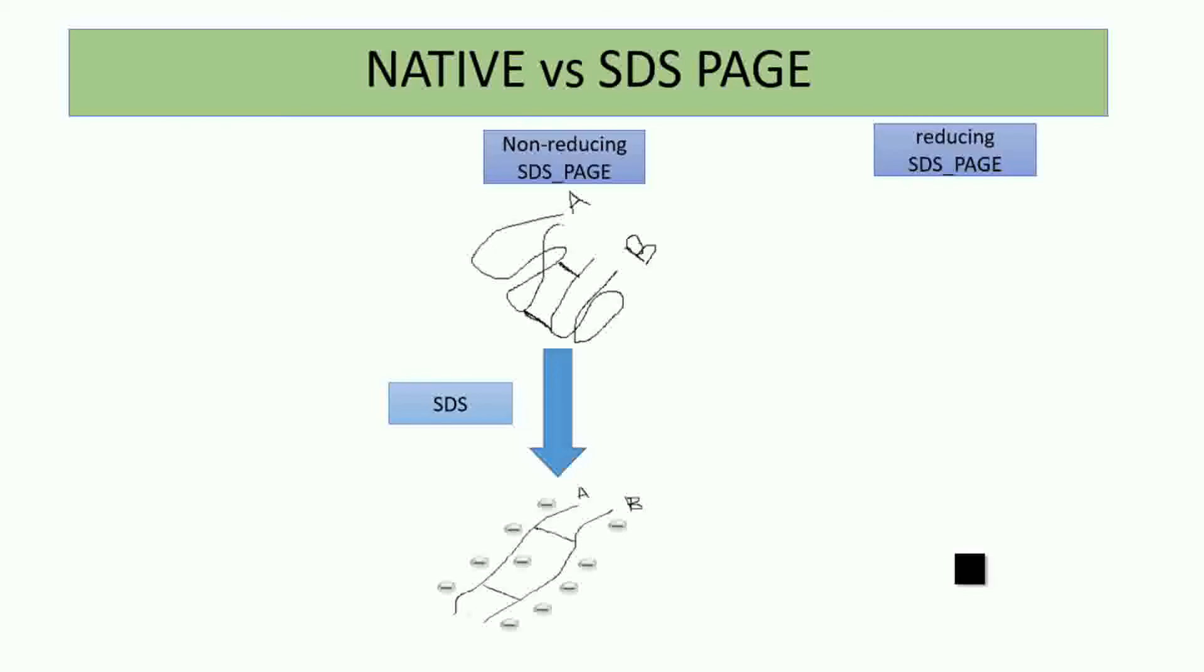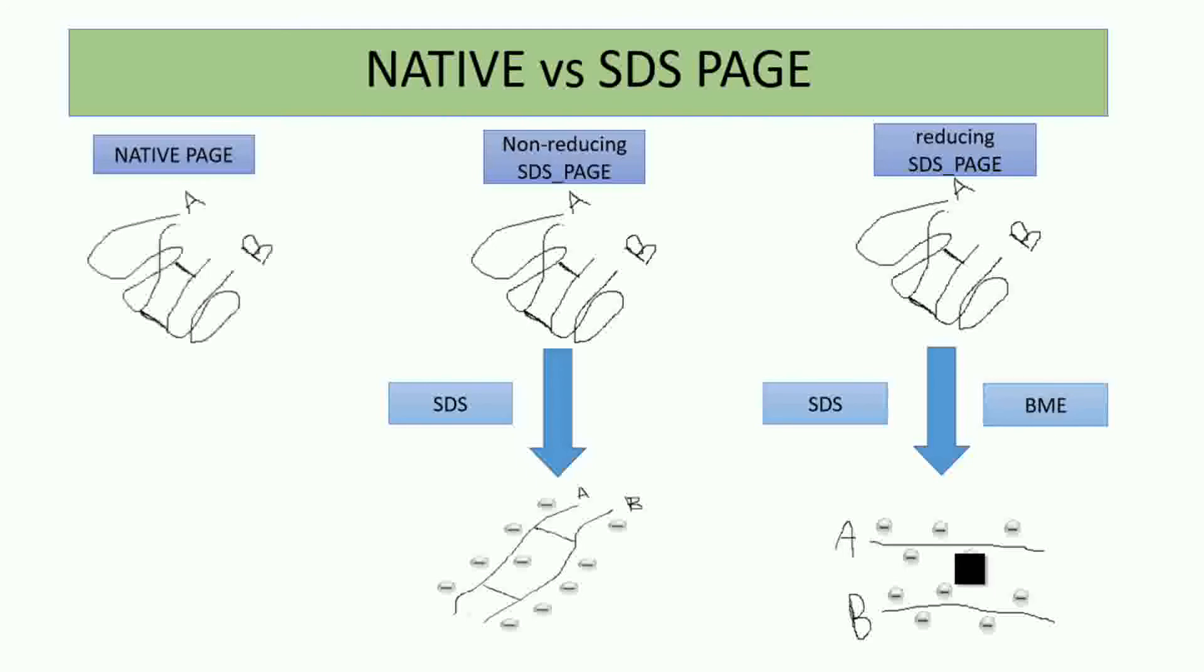In reducing SDS PAGE we use both denaturing agent and reducing agent like beta-mercaptoethanol. We get the two polypeptide chains totally separated and negatively charged because beta-mercaptoethanol reduces the disulfide bonds. In Native PAGE we don't use any of this, so we maintain the 3D structure of the protein.